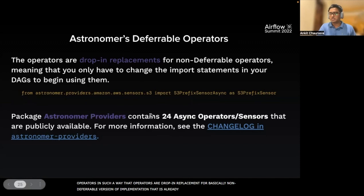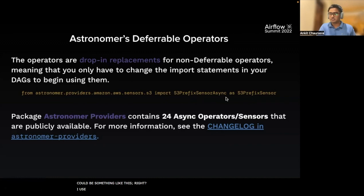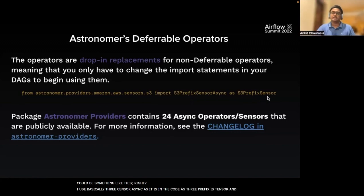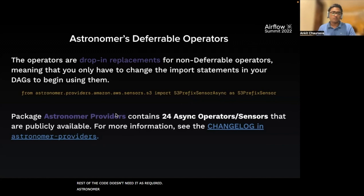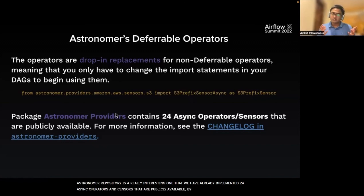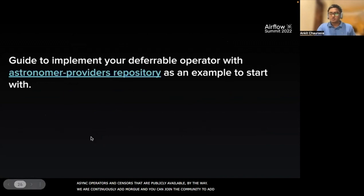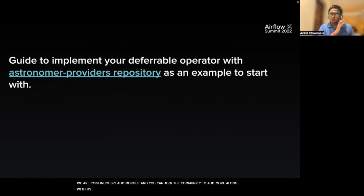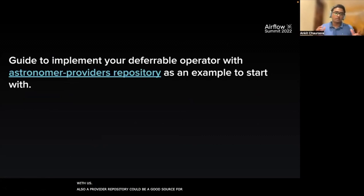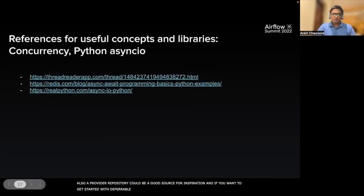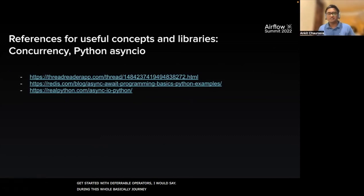The Astronomer provider repository is a really interesting one — we have already implemented around 24 async operators and sensors which are publicly available, and we are continuously adding more. You can join the OSS community to add more along with us. The Astronomer provider repository can also be a good source of inspiration if you want to get started with deferrable operators. During this journey of writing deferrable operators, there are a couple of links and references I found personally very useful, including understanding async IO in Python, the concept of concurrency, and various documentation.